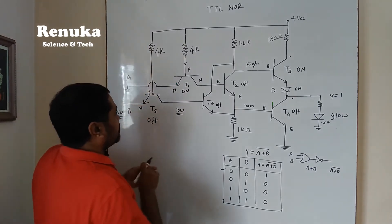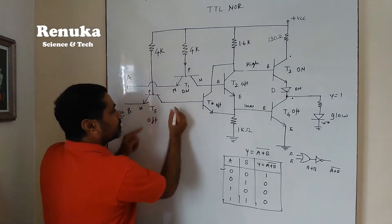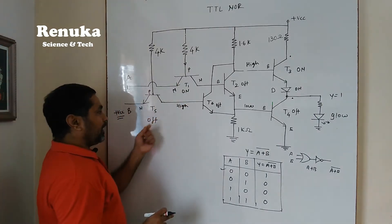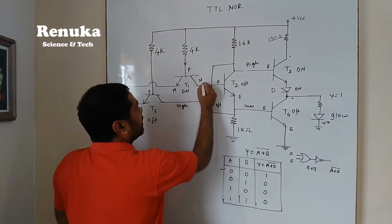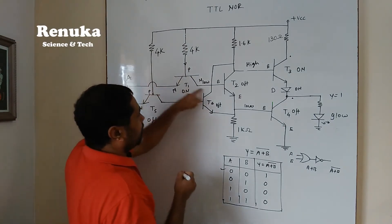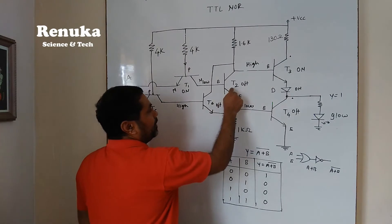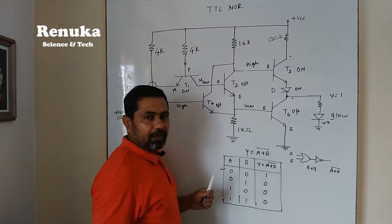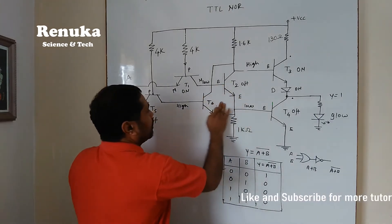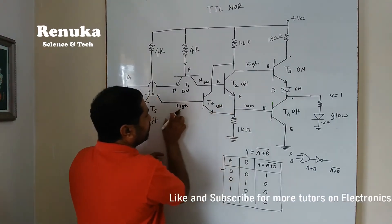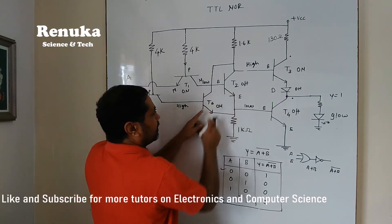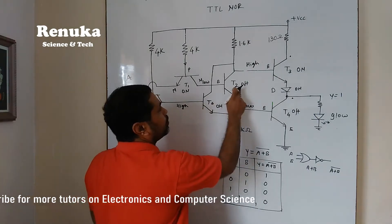T5 is OFF, so all current flows towards the collector of T5, creating high voltage at its collector. T1 is ON, so its collector has low voltage. T6 and T2 are connected in parallel — T6 will be ON because there is high voltage at the base of T6, while T2 is OFF because T1's collector is low. So T6 is ON and T2 is OFF.